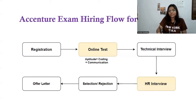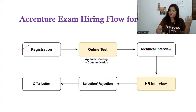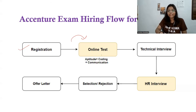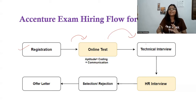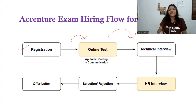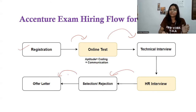Now let's discuss the hiring process for 2025. First, you have to register whenever the company comes to your college, then they will send you the online test link. The online test will consist of an aptitude test, then coding, and then communication. After the online test there will be a technical interview — in many cases combined with an HR interview — and then they will decide whether you are selected or rejected. If selected, you will get the offer letter.